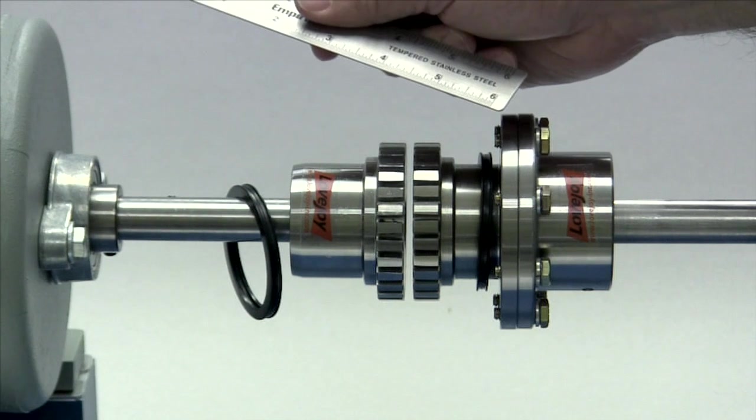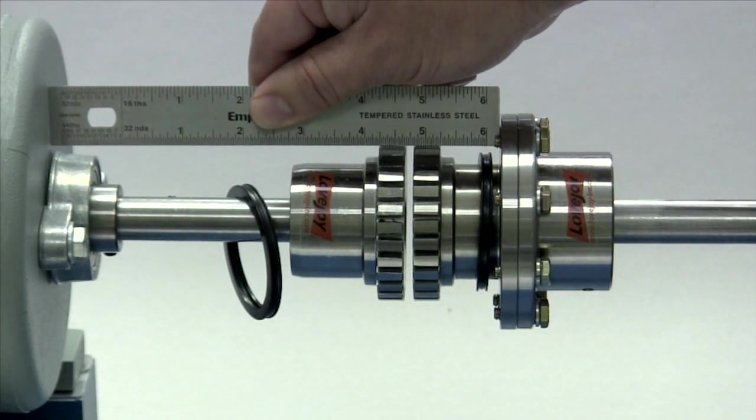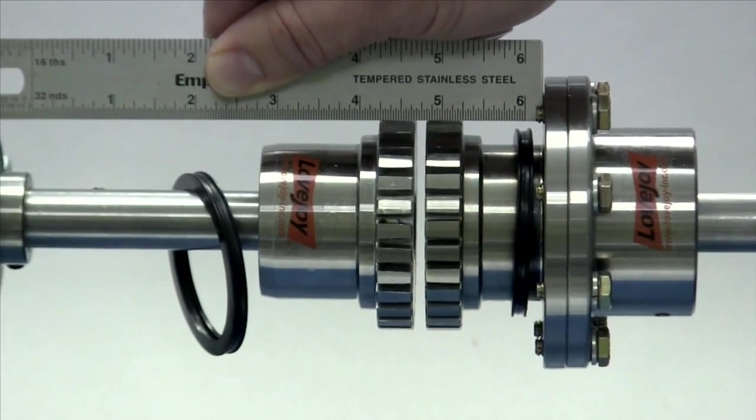To check the basic alignment, start by laying a straight edge across the major diameter of the hubs. The maximum allowable parallel offset should not exceed the amount for your particular coupling size as specified in the installation guide.